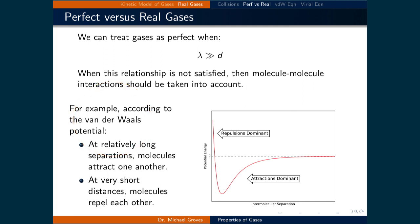These become much less significant the further apart molecules are from each other. So, in general, we can treat gas as ideal when the mean free path is much larger than the diameter of the molecule.